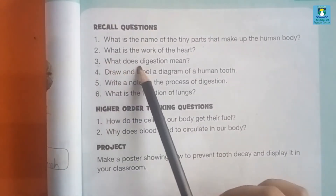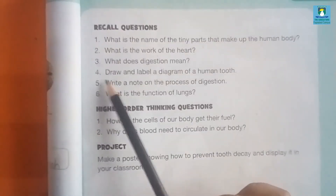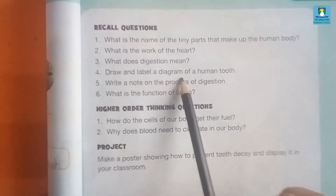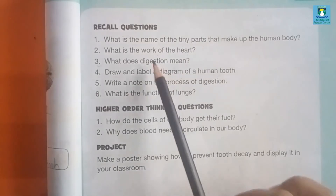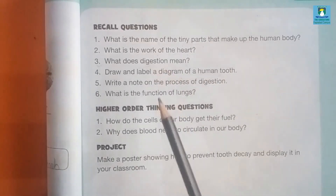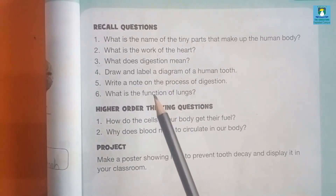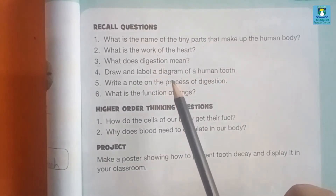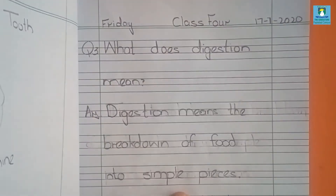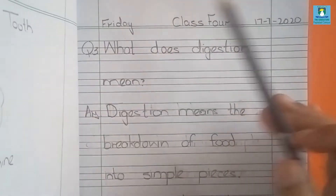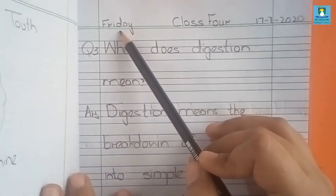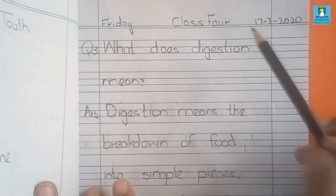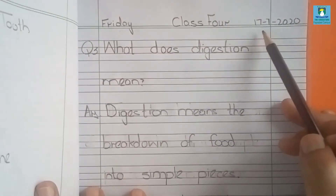Question 3: What does digestion mean? Question 4: Draw and label a diagram of a tooth. You can attempt these two questions in your notebook. First of all, write the day — today is Friday — and write the date.